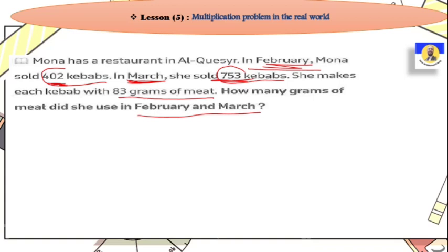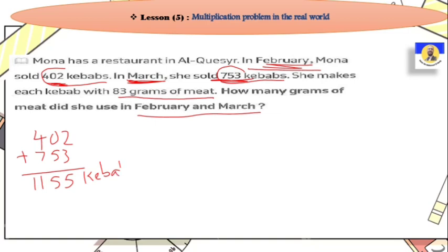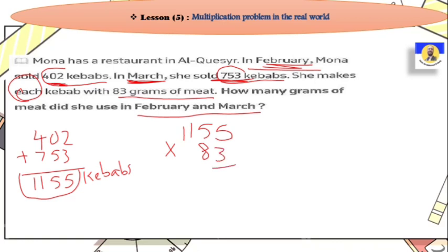We want to find the total grams — not just the total number of kebabs. If I just did 402 plus 753, that gives me the total number of kebabs across the two months, but the question asks how many grams of meat she used. So I take that total — 1,155 — and since each kebab used 83 grams, I need to multiply by 83.